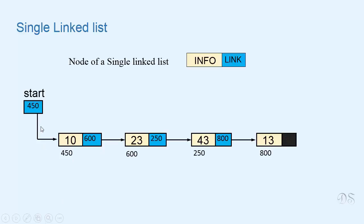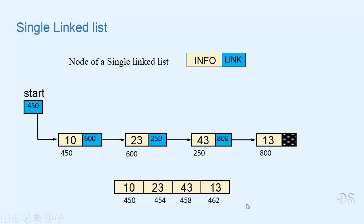The address of the first node is stored in a special pointer we have named 'start', and all the elements of this list can be accessed with the help of this pointer only. The nodes of a linked list are not stored in contiguous memory locations, while the elements of an array are stored in contiguous memory locations. This is because the whole array is allocated once at compile time, while nodes of a linked list are allocated at different times during run time.